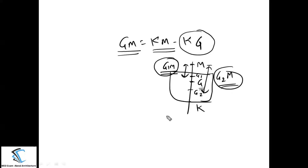There may also be cases where the cargo is loaded such that the centre of gravity shoots above the metacentre. In that case GM becomes negative, meaning G is above M, and the ship may go into an unstable condition. So whenever you load cargo, the GM value must remain within the prescribed range for that particular ship.